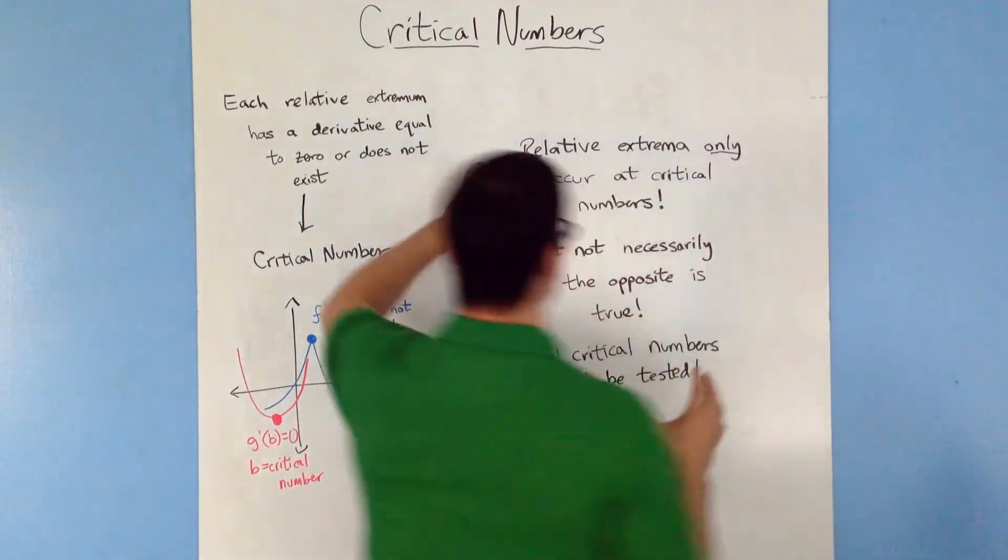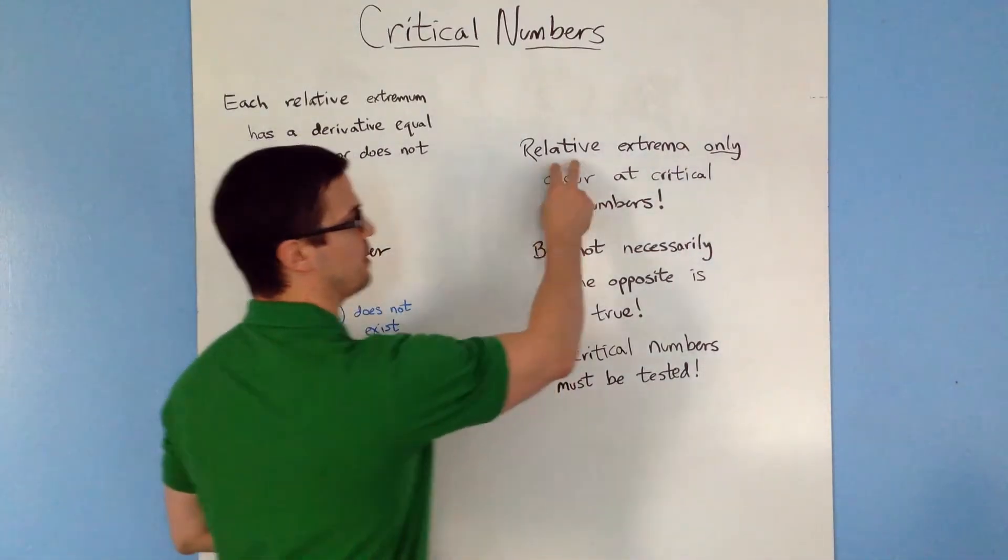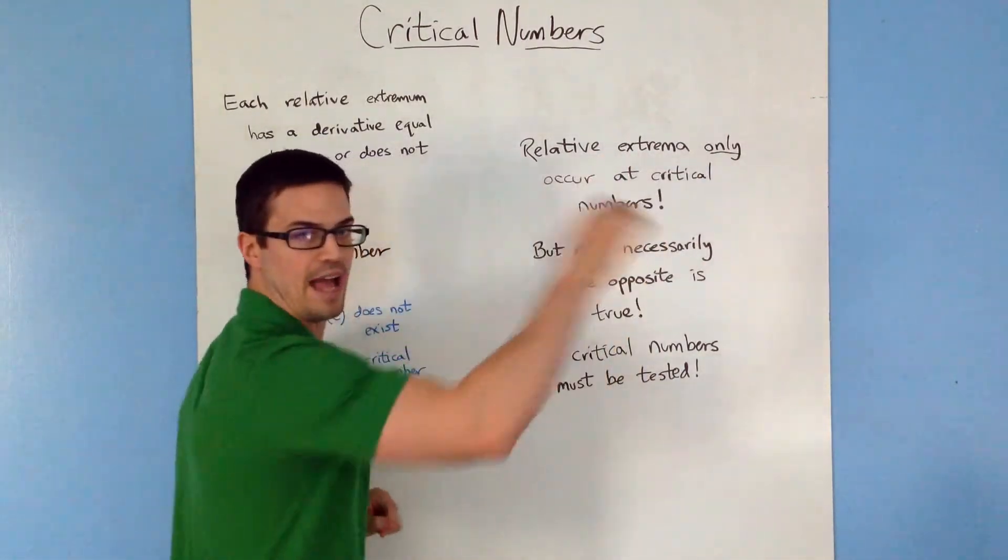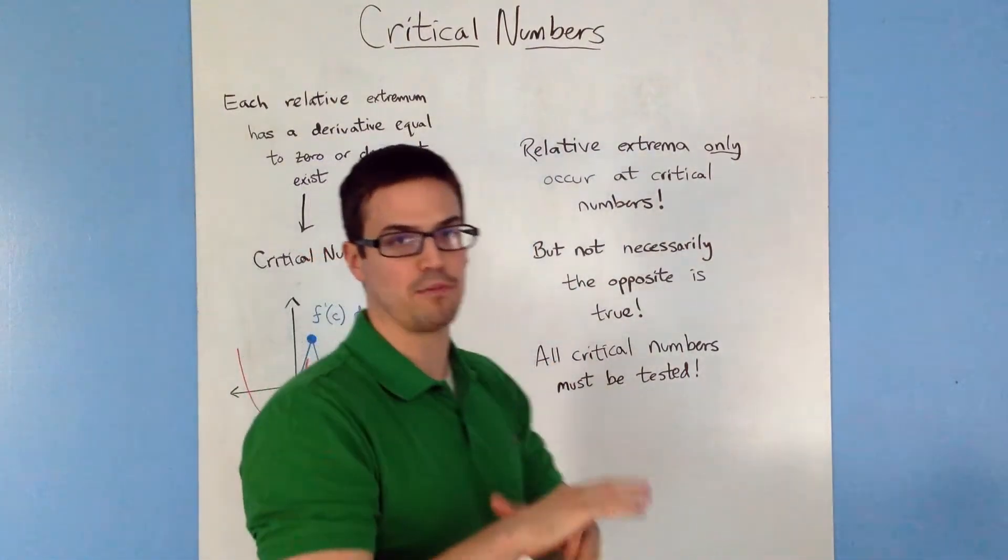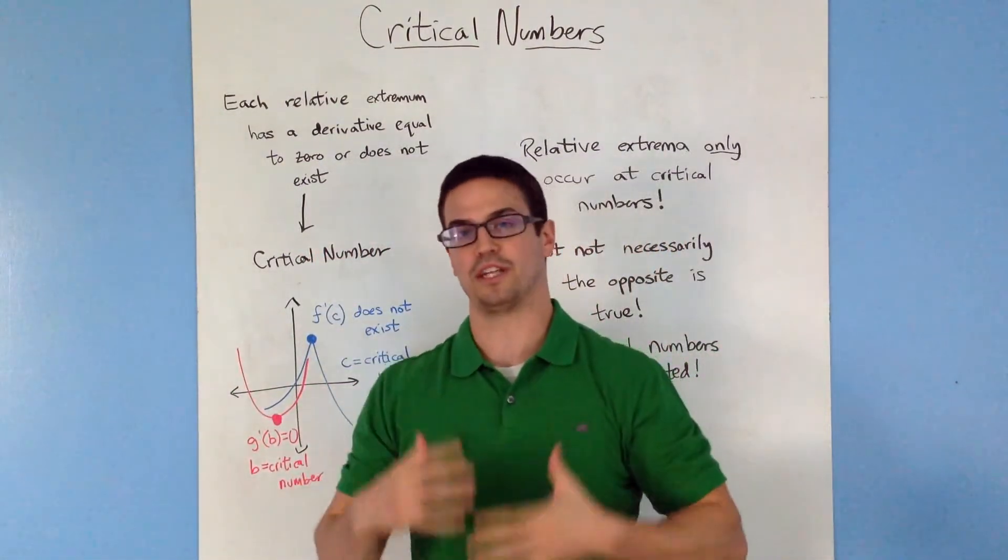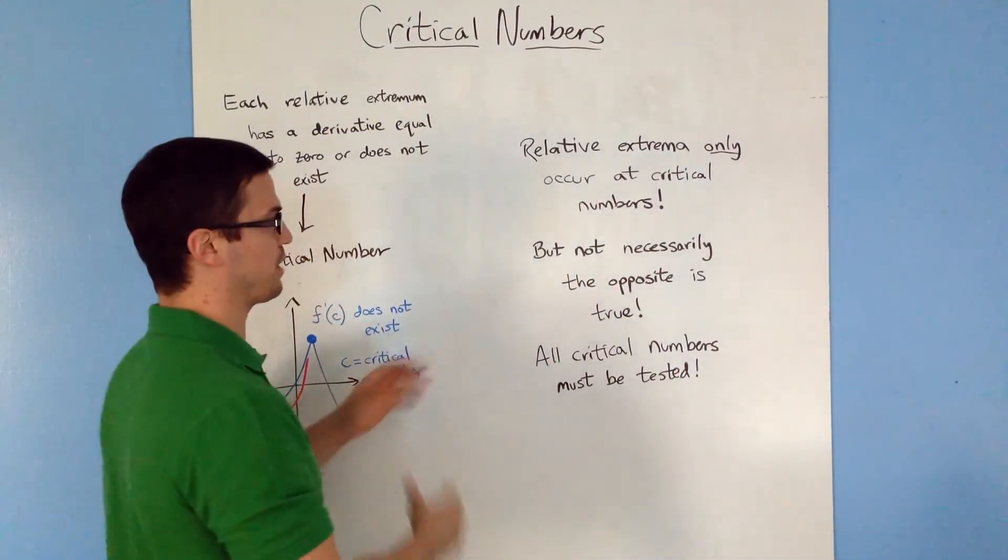Okay. Now because of that, we have some theorems that are basically just one theorem that I wrote over here. It says relative extrema only occur at critical numbers because the relative mins and maxes only occur at critical numbers.